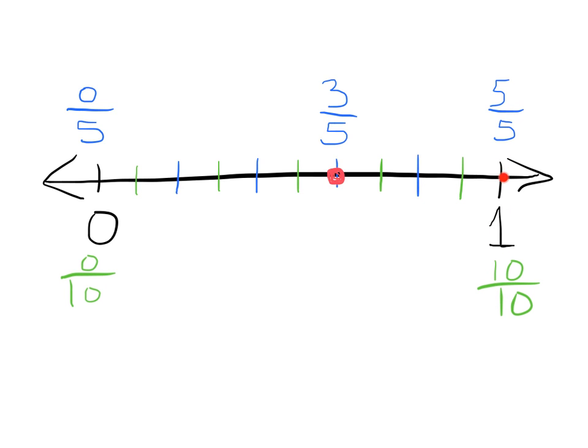So what would this fraction be? Well, here's 10 tenths. So 9 tenths, 8 tenths, 7 tenths, 6 tenths. So here is the fraction 6 tenths. If we wanted to check it out the other way, start at 0 tenths, 1 tenths, 2 tenths, 3 tenths, 4 tenths, 5 tenths, 6 tenths.